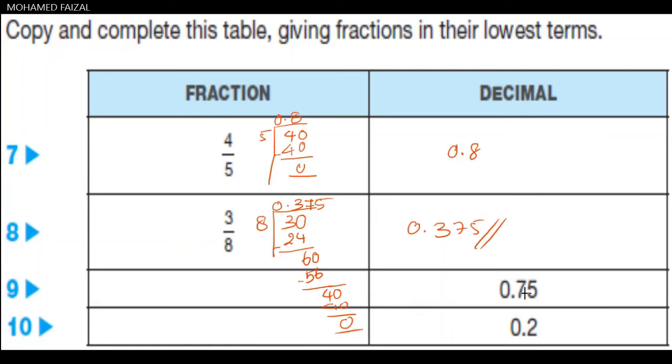Next one, we have to convert this decimal into fraction. They are giving 0.75. To convert this 0.75, here we are having two decimals after the dot. If you have two decimals after the dot, we have to divide the whole number. We can make it as 75 divided by 100, that is a number with two zeros.